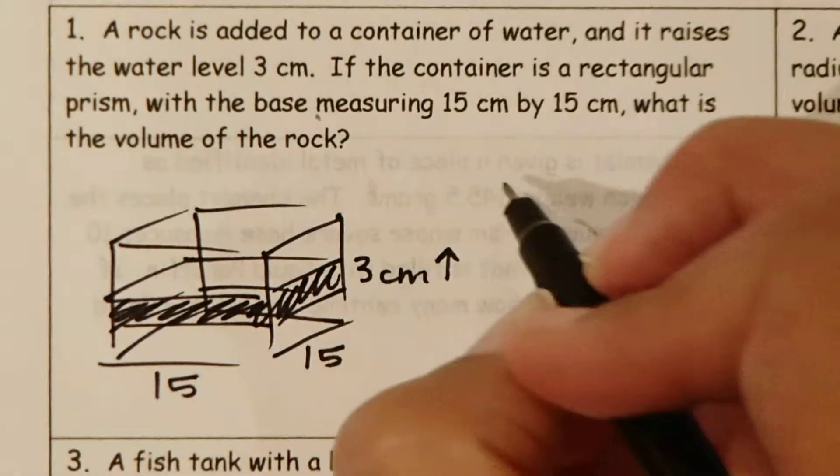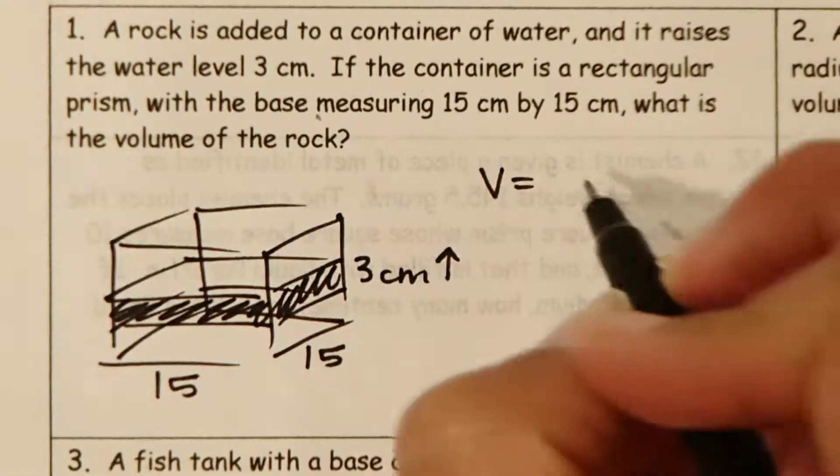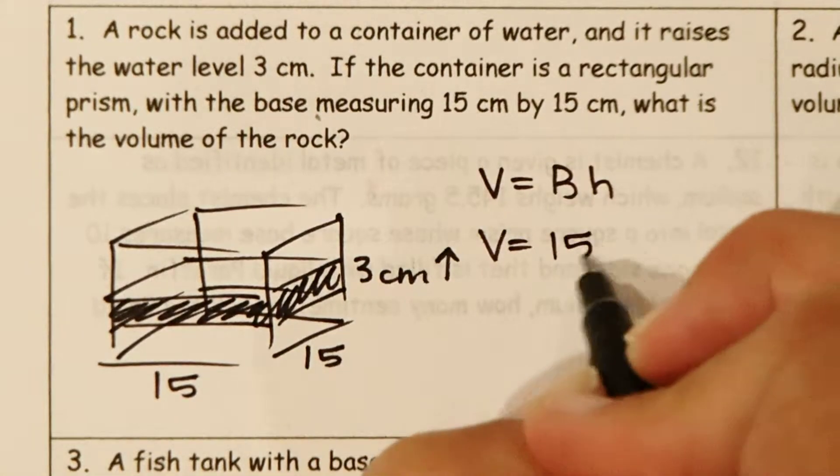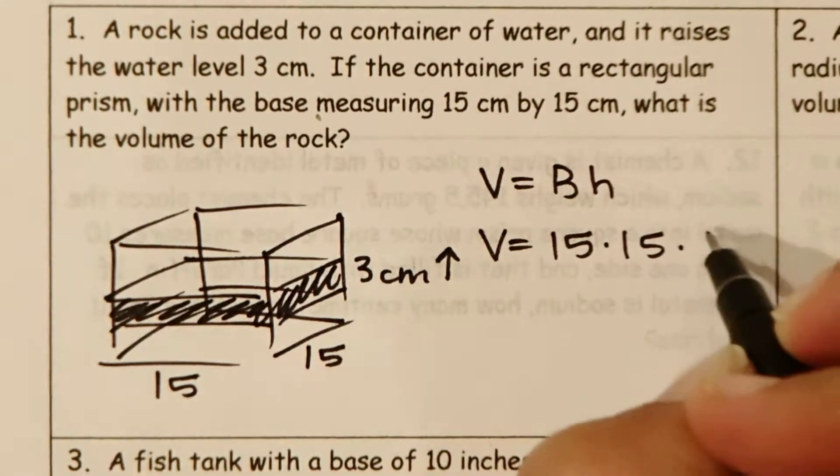So in order to calculate this, we know the volume of a rectangular prism is the area of the base times the height, and in this case this is going to be 15 times 15 times 3.